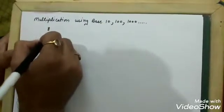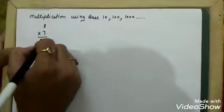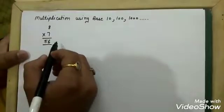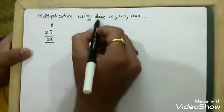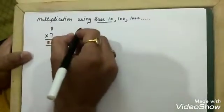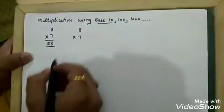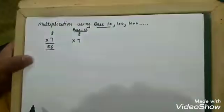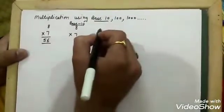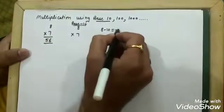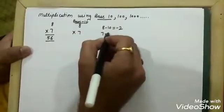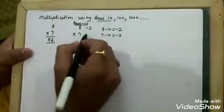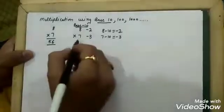Like 8 multiply 7, it is 56, right? But today we are going to learn the same kind of multiplication with a different method using base 10. 8 multiply 7 — what is the base? Base is 10. Now how we are going to use this base: 8 minus 10 is minus 2, and 7 minus 10 is minus 3. So we write minus 2 and minus 3 here.